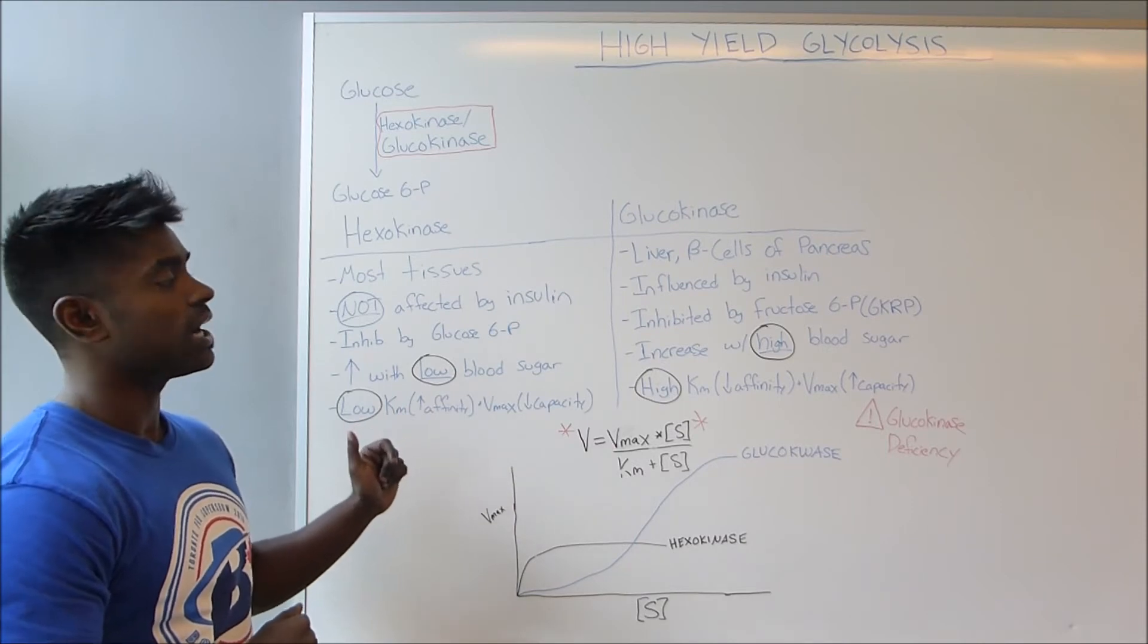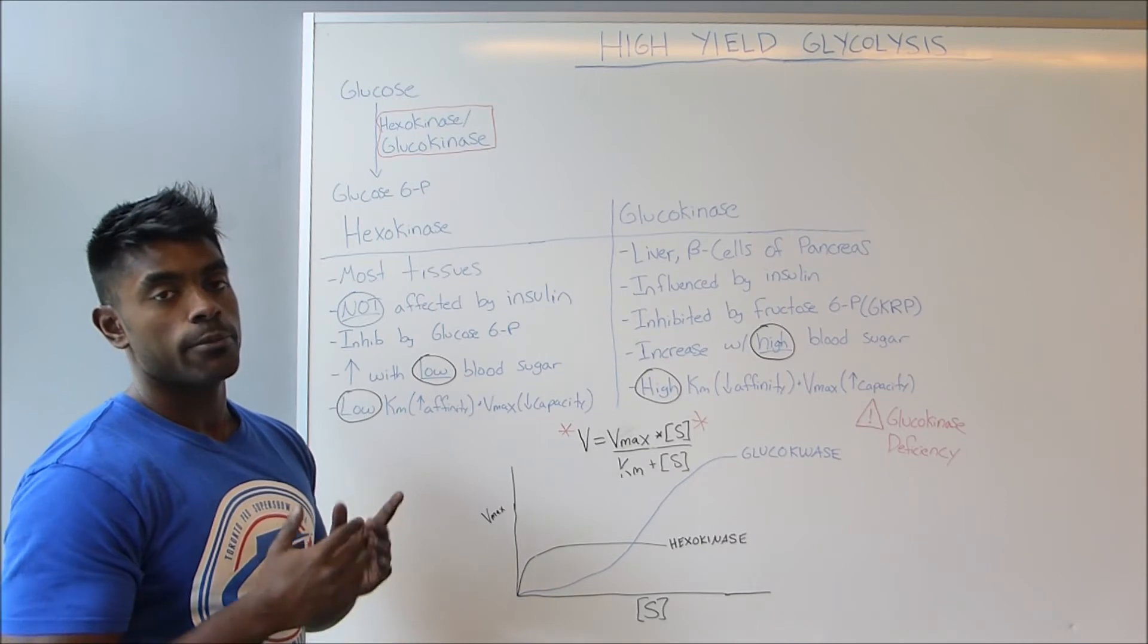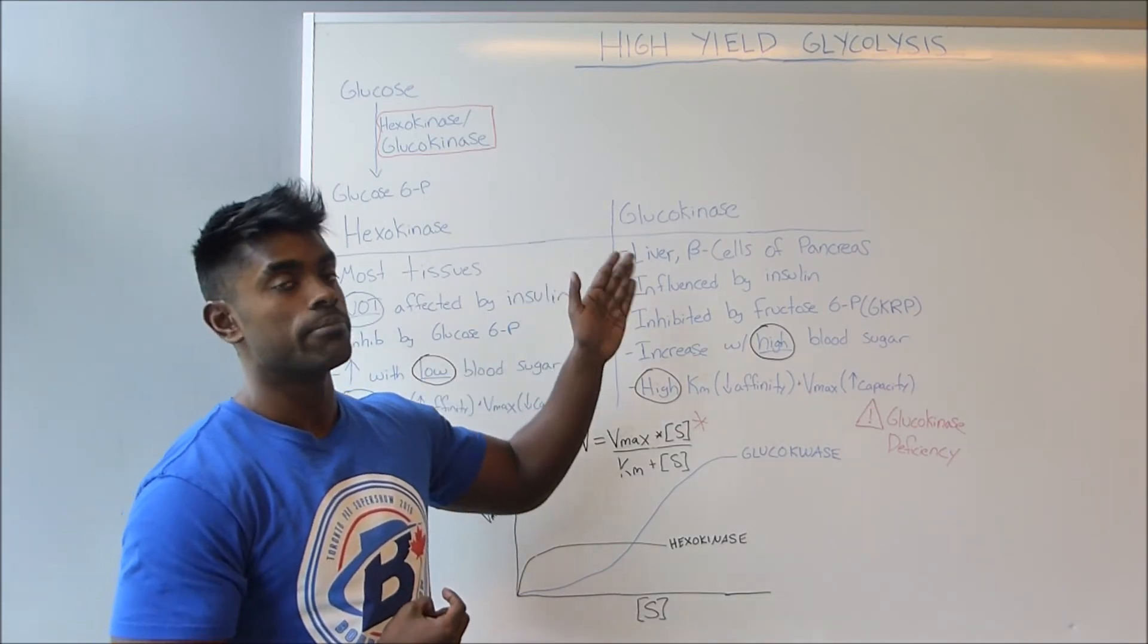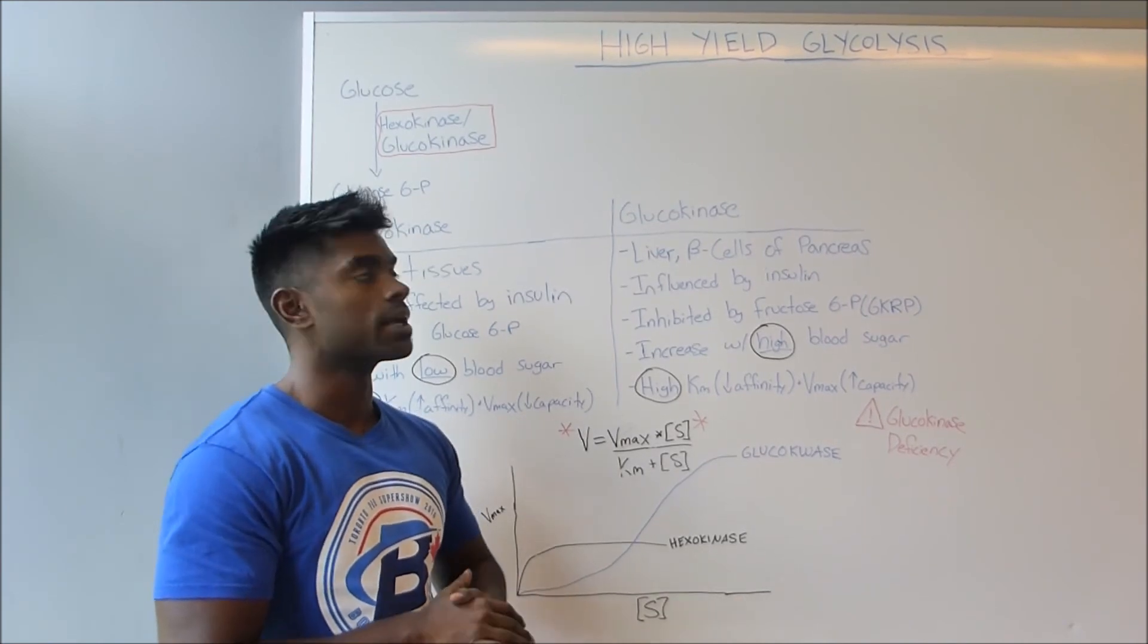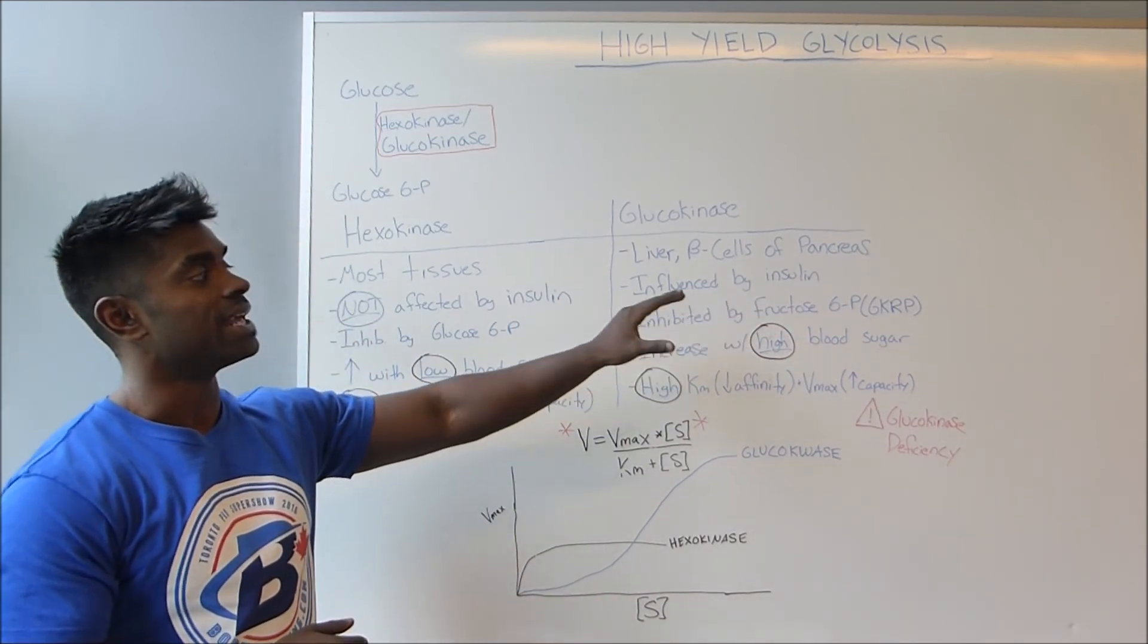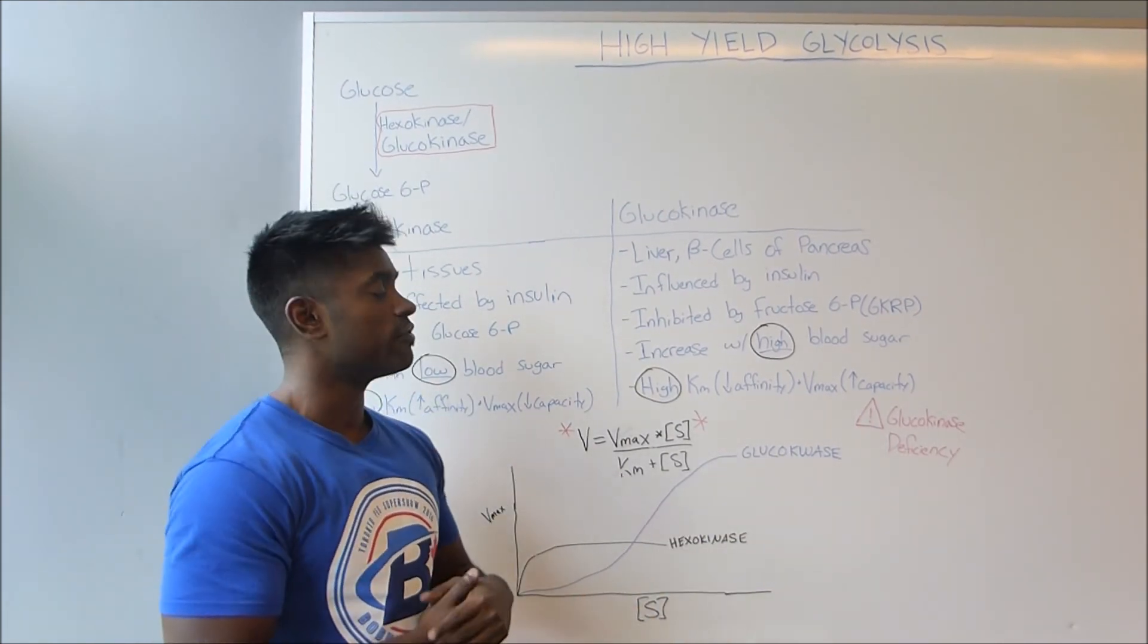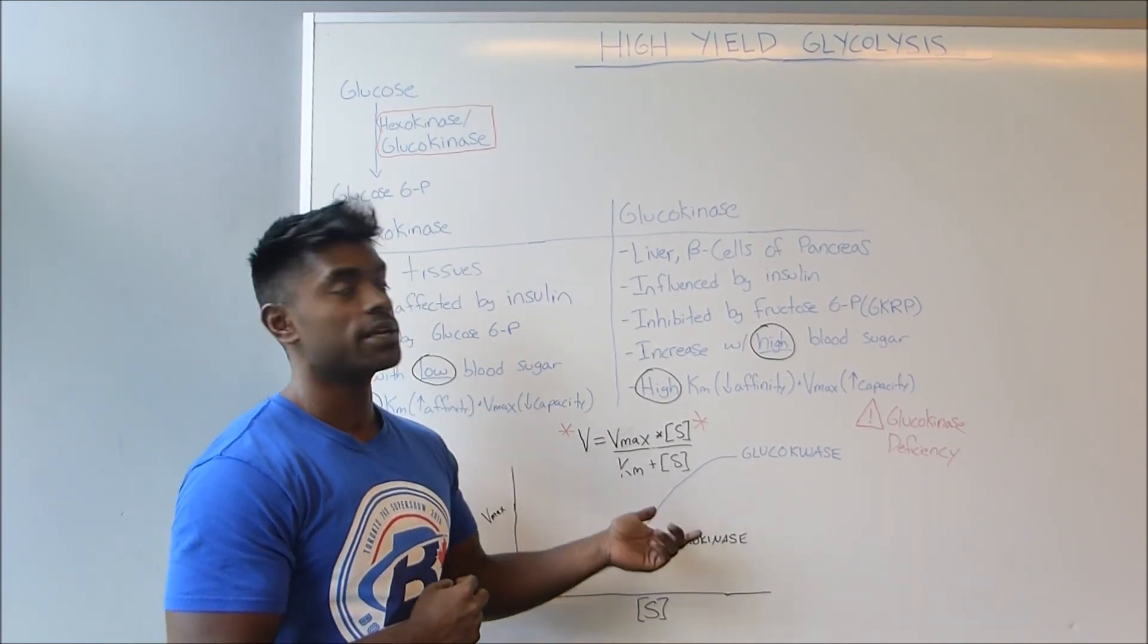And the last thing we can talk about to tie in is glucokinase deficiency. Now, with glucokinase deficiency, it makes sense that those individuals are unable to take up glucose within their cells, more specifically the liver and beta cells of the pancreas. So as we can expect, these patients are going to be hyperglycemic. However, it's also even worse because since we're talking about the pancreas, we're going to have an inability to secrete insulin. So that's going to make things even worse. And lastly, it should be noted that glucokinase deficiency often comes out in terms of during pregnancy.